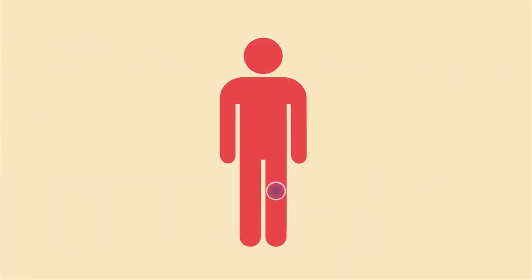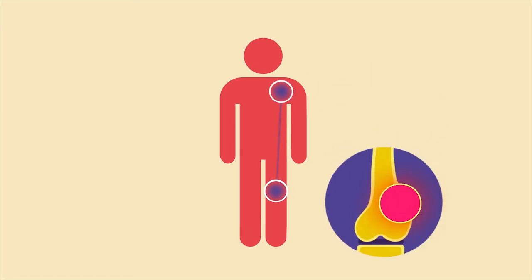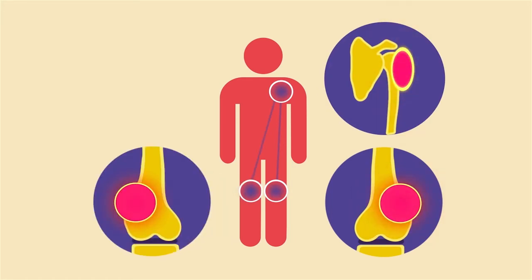Primary cancer is where the cancer starts. If some of the cancer cells break away from the primary cancer site and spread by entering the bloodstream or the lymphatic system and settle in another part of the body, this cancer is called a secondary cancer or metastatic cancer.